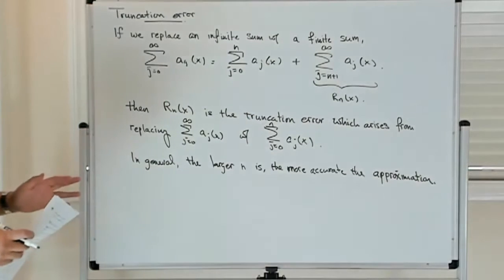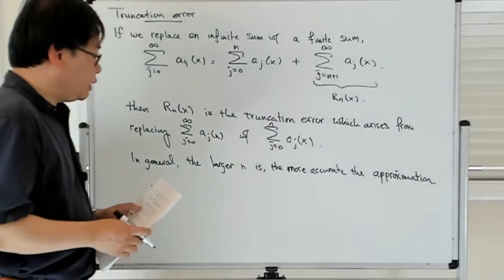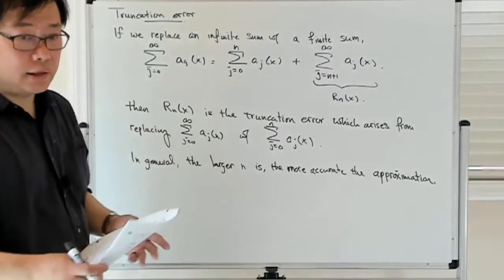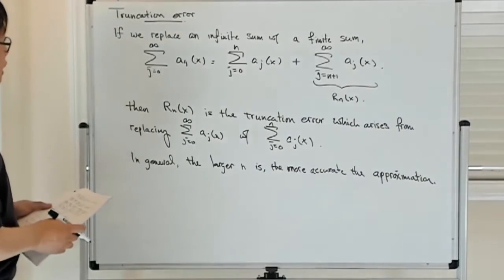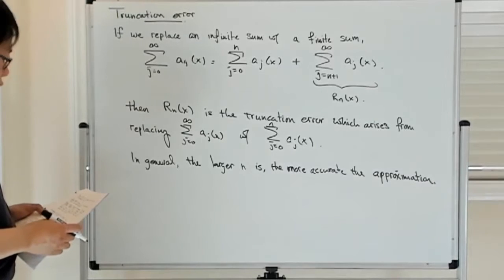So as we saw before with the Taylor polynomial, you have a remainder term, and we have two ways of expressing the remainder term: one which involves some polynomial term but evaluated at an unknown point, and another one which involves this integral representation of the remainder term, or the truncation error.